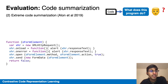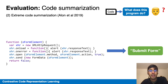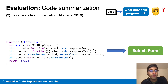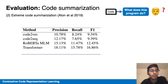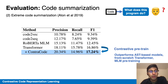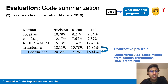The second task is code summarization, where a program is summarized in natural language — in this case, the caption 'submit form.' Various baselines are shown in the table. Contrastive learning improves the transformer and outperforms AST-based baselines, as well as masked language modeling pre-training.